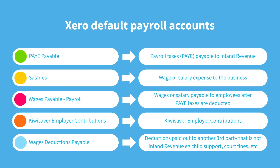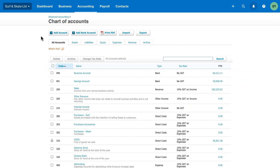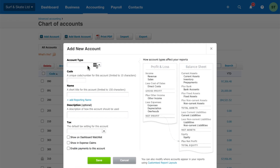When accounting for payroll transactions such as earnings, deductions, and taxes, Xero provides five default payroll accounts. However, there may be times when you want to itemise certain costs and taxes to track these more closely in your payroll and financial reports. For example, you may want to split wages or salary for employees versus company directors, track bonuses or commissions separately to help budget for the next financial year, or track each statutory deduction like student loans or court fines separately. To do this, create your own accounts in the chart of accounts for each of the earnings and costs you want to track separately.